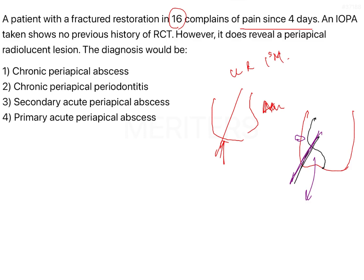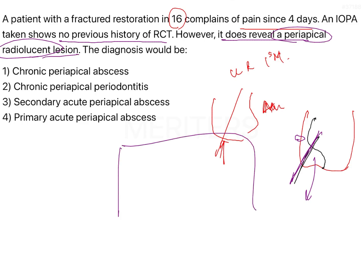The patient is having pain since four days and the IOPA shows no previous history of RCT. However, it does reveal a periapical radiolucent lesion. On the X-ray, looking at the tooth and its roots, this area appears radiolucent.